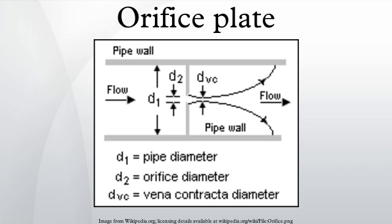The orifices are normally concentric with the pipe, the eccentric plate being a specific exception, and circular to a high tolerance.